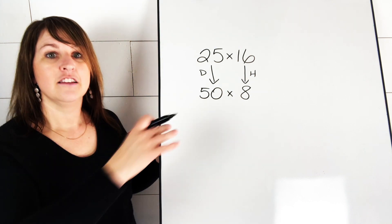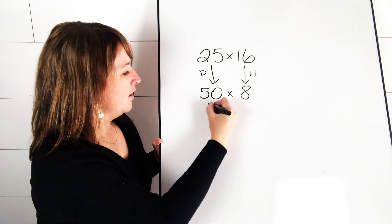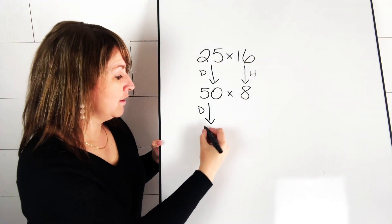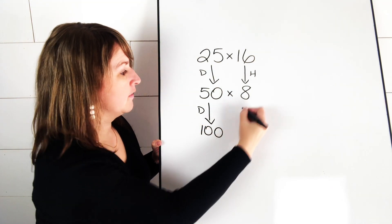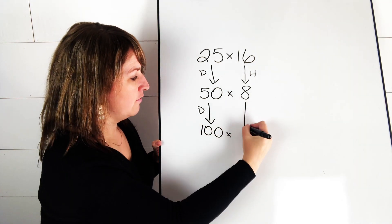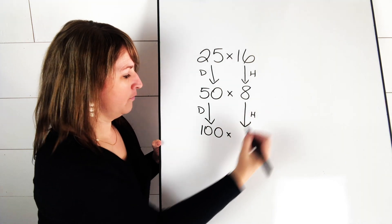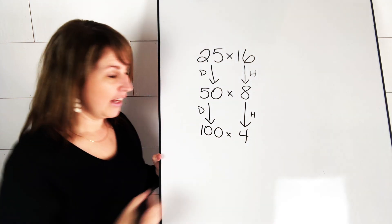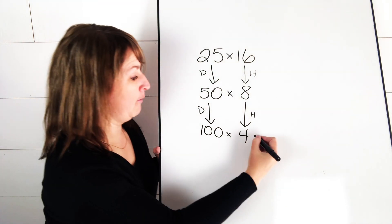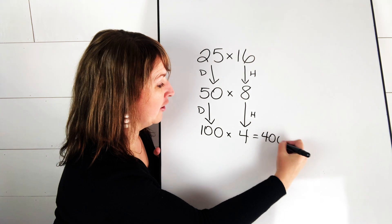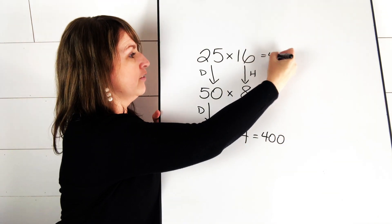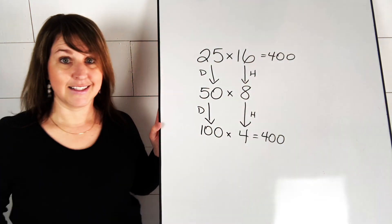But if it's not easier yet, let's do another step. Let's double the 50. Let's double this again. So the double of 50 is 100, and now we have to divide this side in half. So what's half of 8? That is 4. Now 100 times 4, that's a pretty easy problem to solve. So we know that it's 400. So 400 is the answer to 25 times 16.